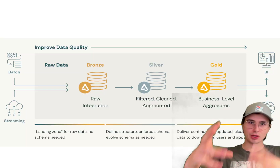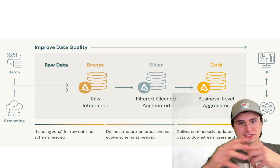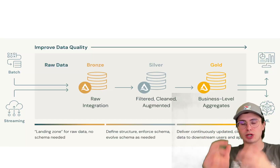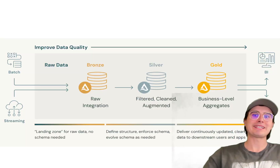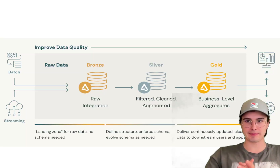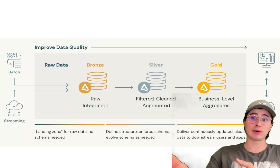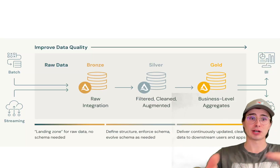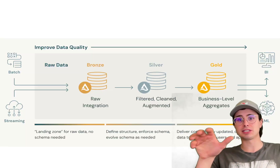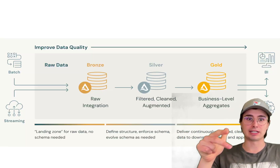The reason why you might want to implement a Medallion architecture is really to make sure you have a structured, repeatable way to process, cleanse, and structure your data efficiently. The Medallion architecture, which you might also know as the multi-hop architecture, gives you a robust framework to achieve this by organizing your data into three structured layers: bronze, silver, and gold.